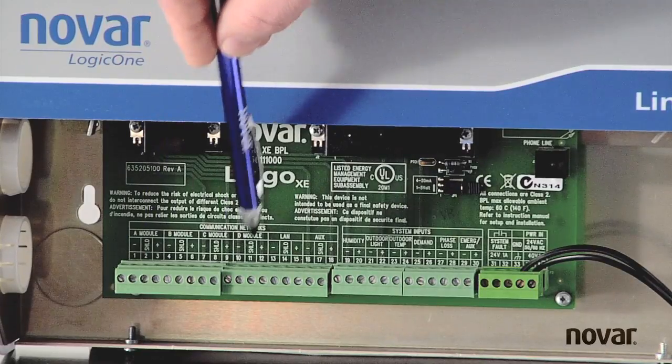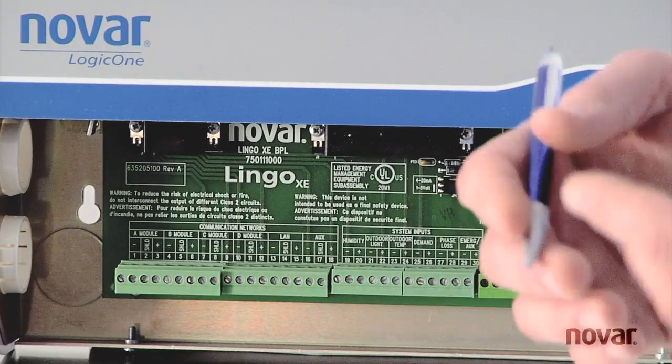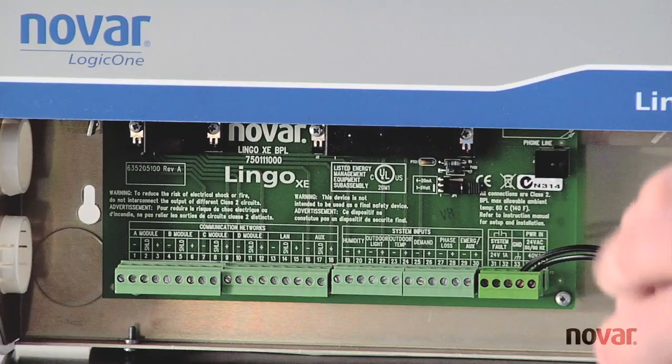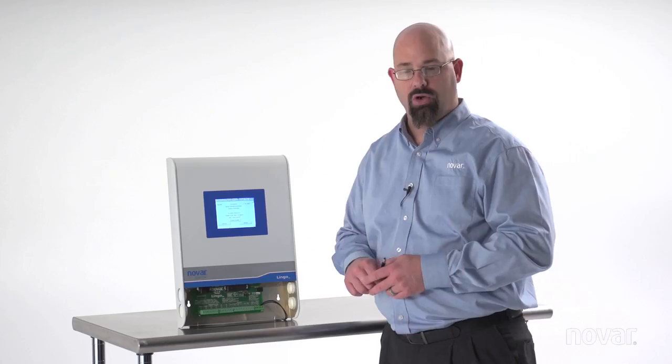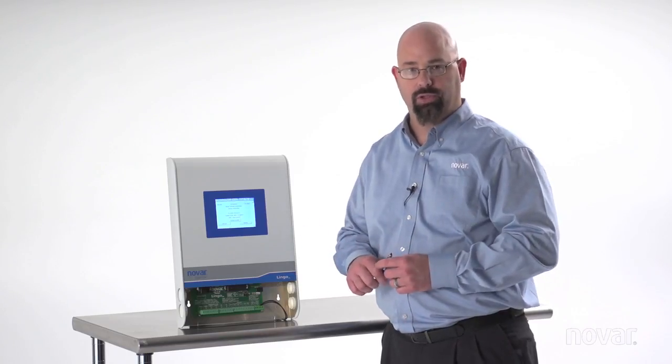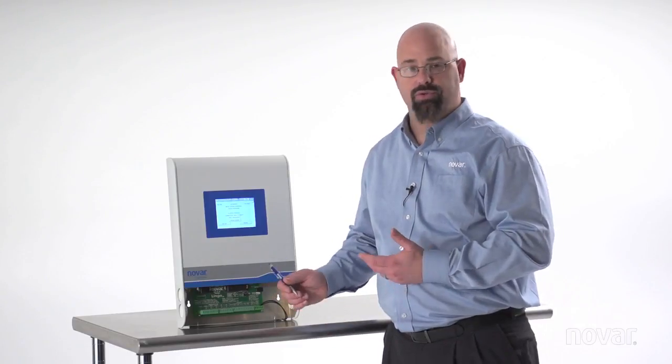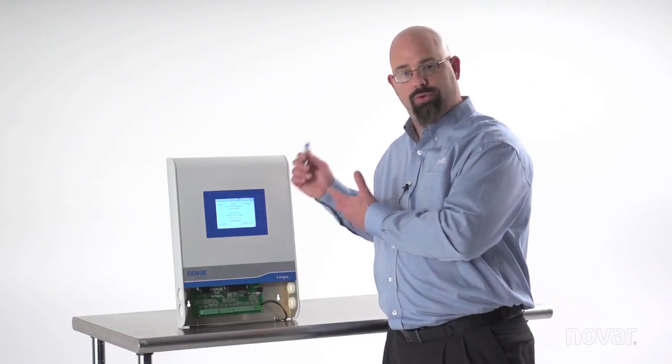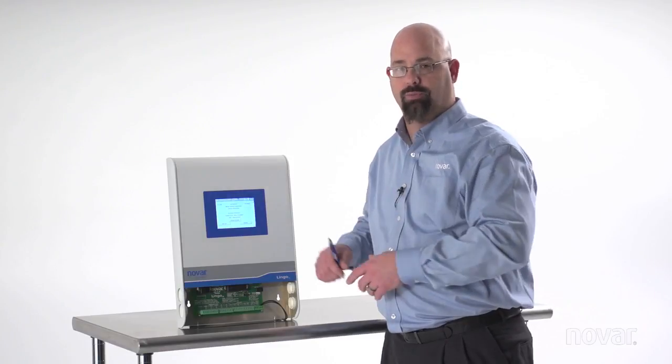And then to the right of that I have a COM port called LAN. That local area network is for executive controllers just like another Lingo or maybe a refrigeration controller that they can report their alarms through this Lingo. He becomes the gateway so we can report those alarms to a central alarm office somewhere.